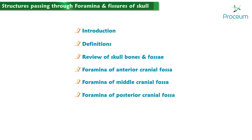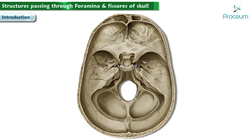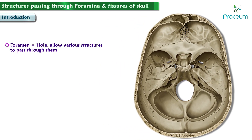Structures passing through foramina and fissures of the skull. In this video we'll be dealing with the foramina and fissures related to the skull. A foramen means a hole that can allow various structures to pass through them. The number of foramina and fissures which can be visualized at the base of the skull can be overwhelming upon the first look. However, once you understand what they are, what they do, and what structures pass through them, these holes can make learning so much more interesting, but multiple revisions are required to keep them in your active memory.